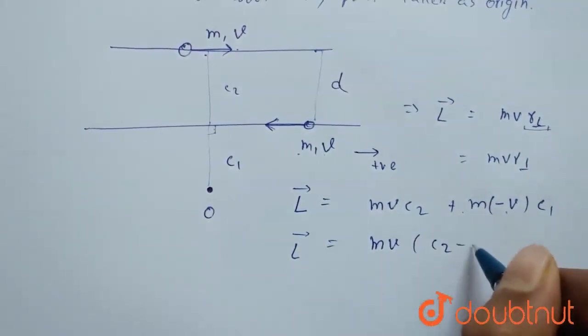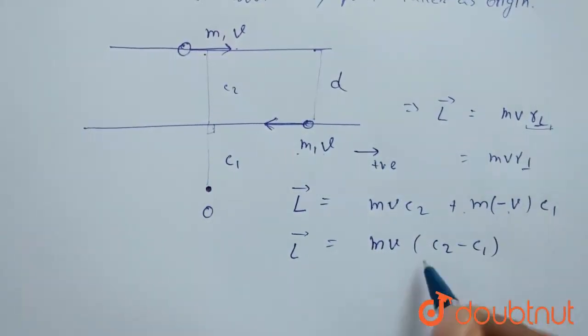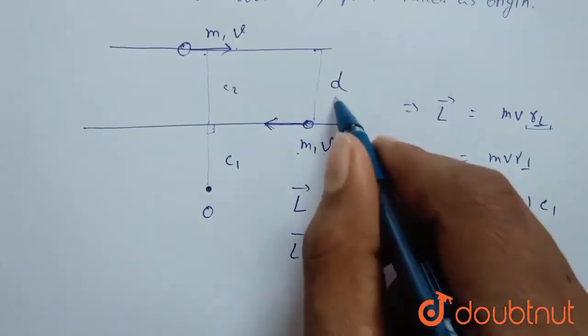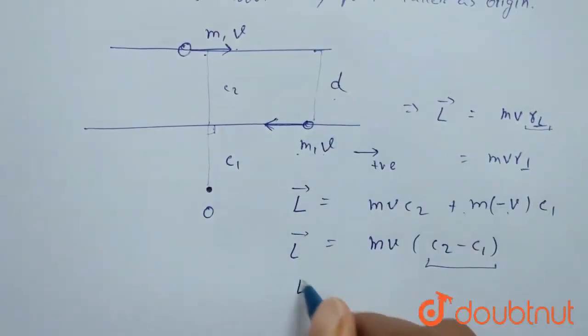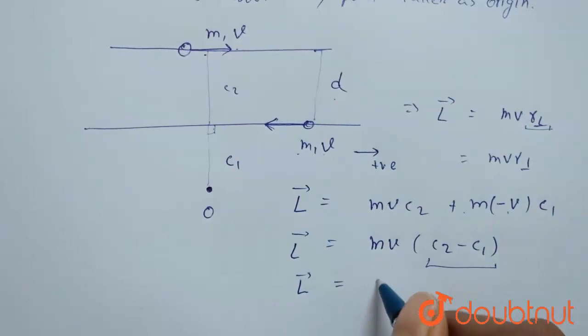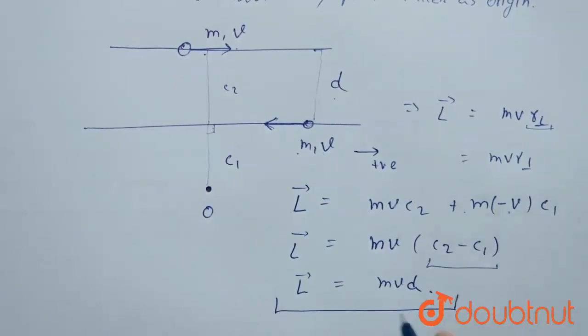And c2 minus c1 is nothing but d. So, our angular momentum vector will be mvd. As this is constant because m and v are constant, and d is also constant. Thank you.